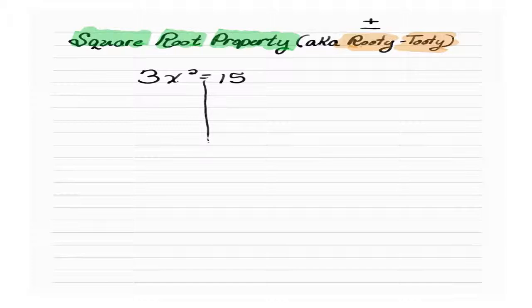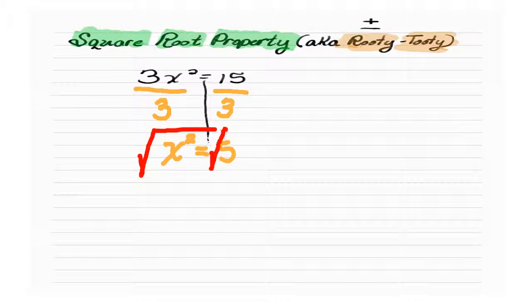So we have 3x squared equals 15. I'm going to do the same thing. Got to get the little x squared guy by himself. So we're going to divide both by 3. End up with an x squared equals 5. Now we're going to square root both sides, that little inverse, square root, square root.